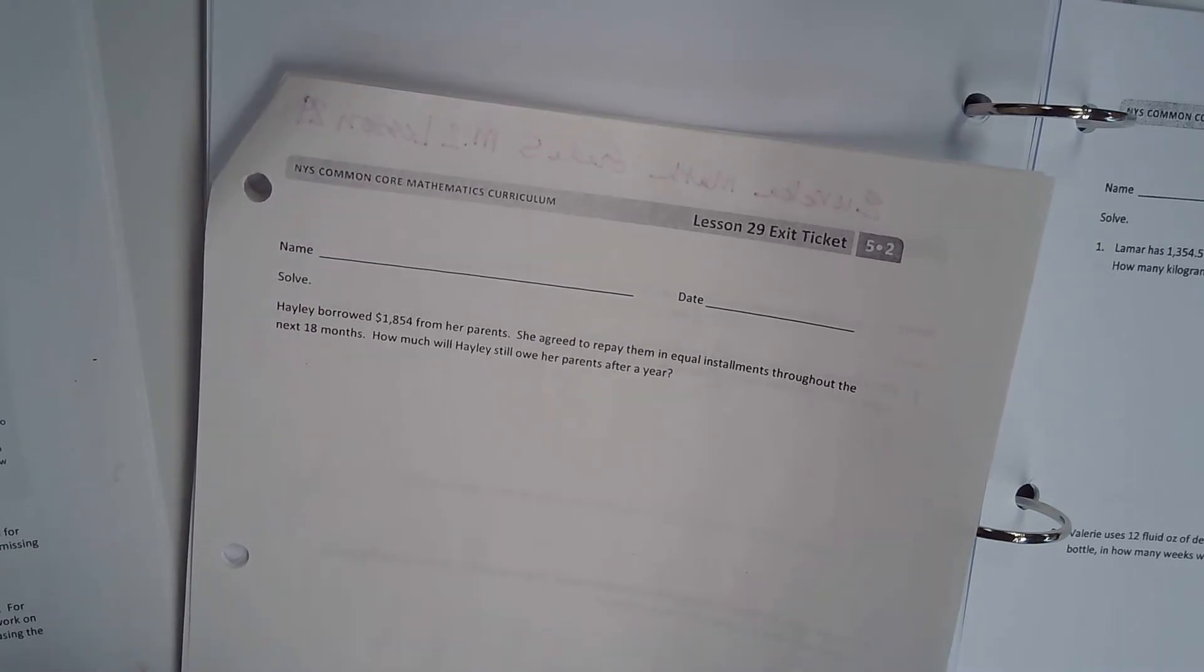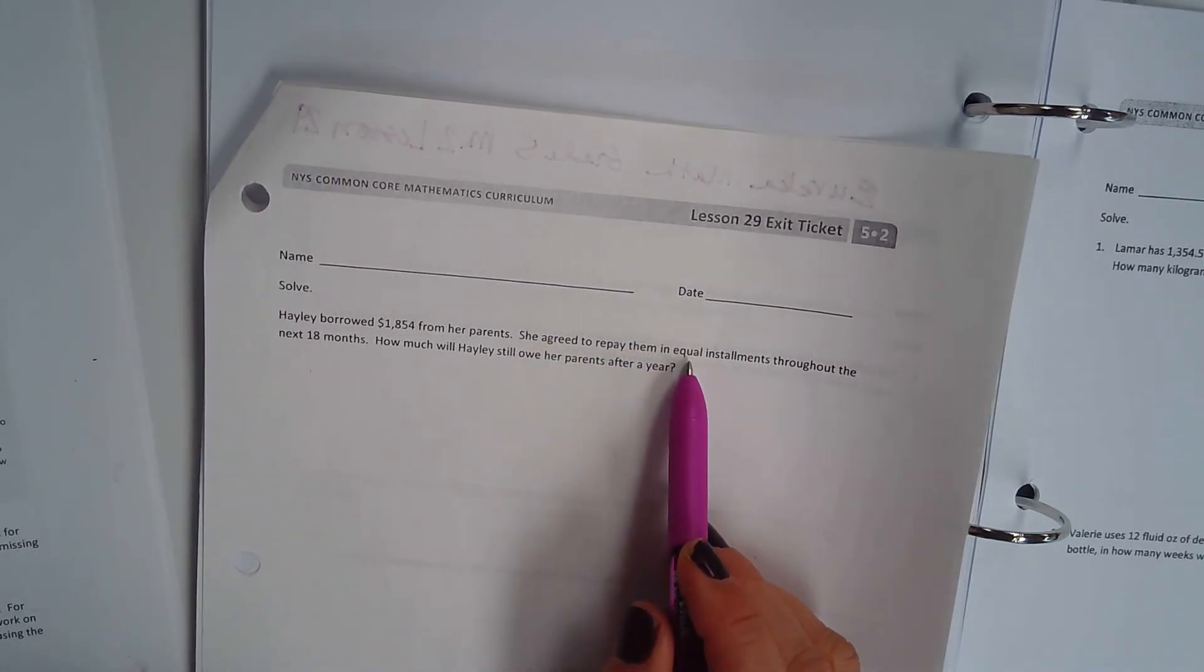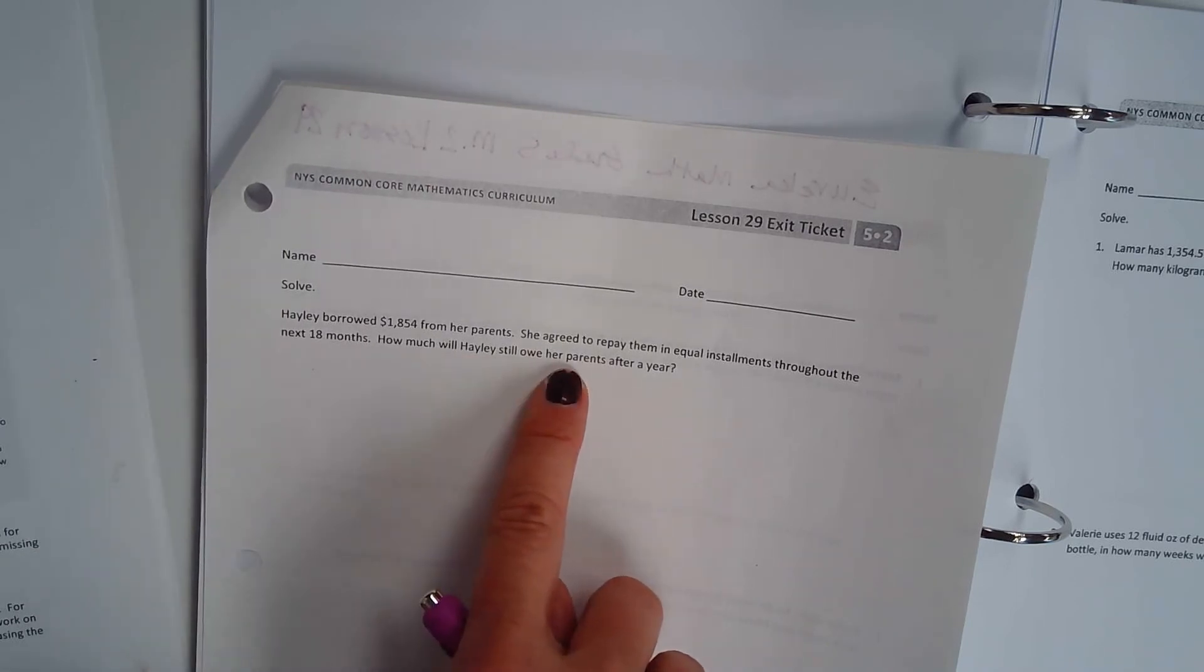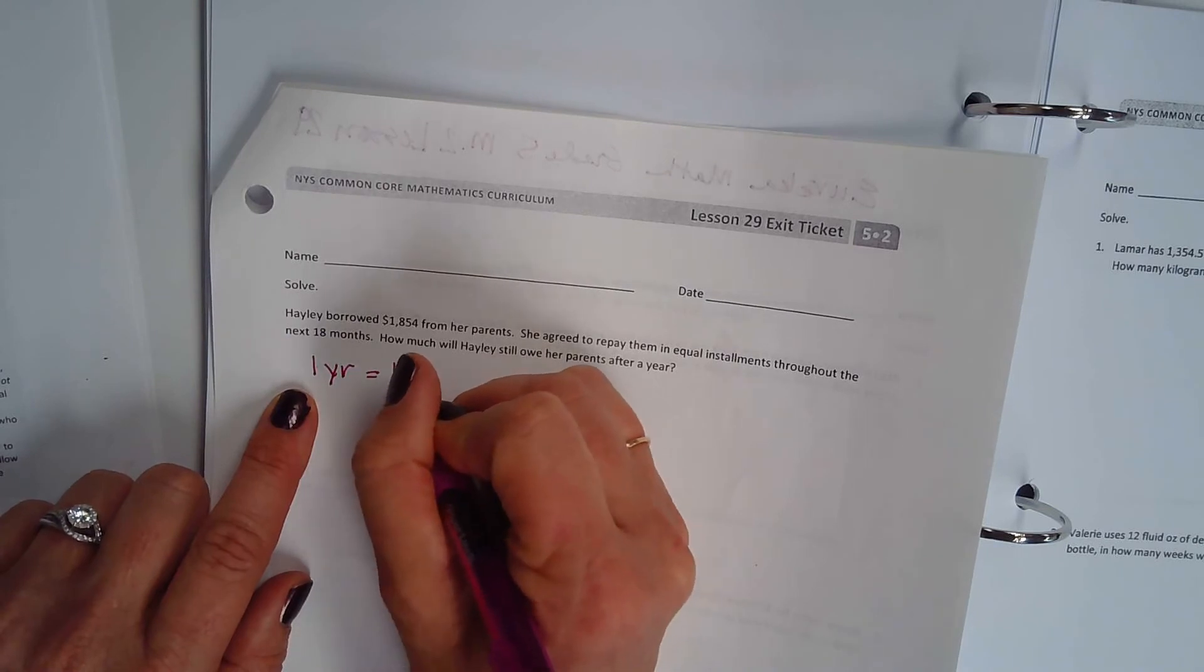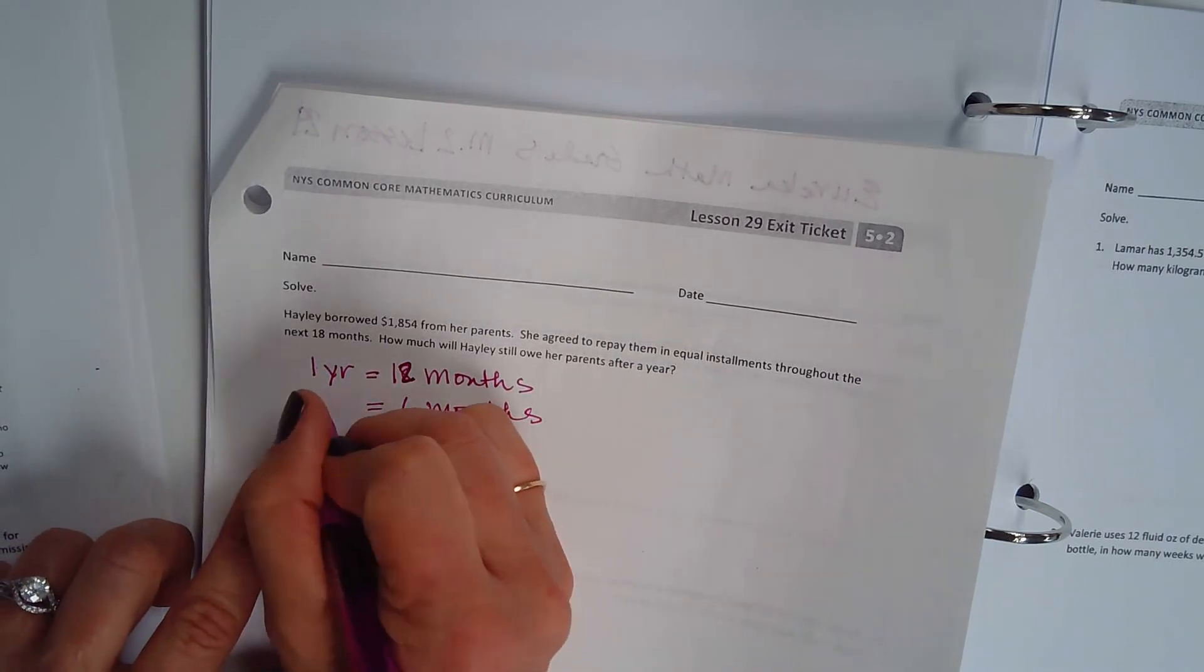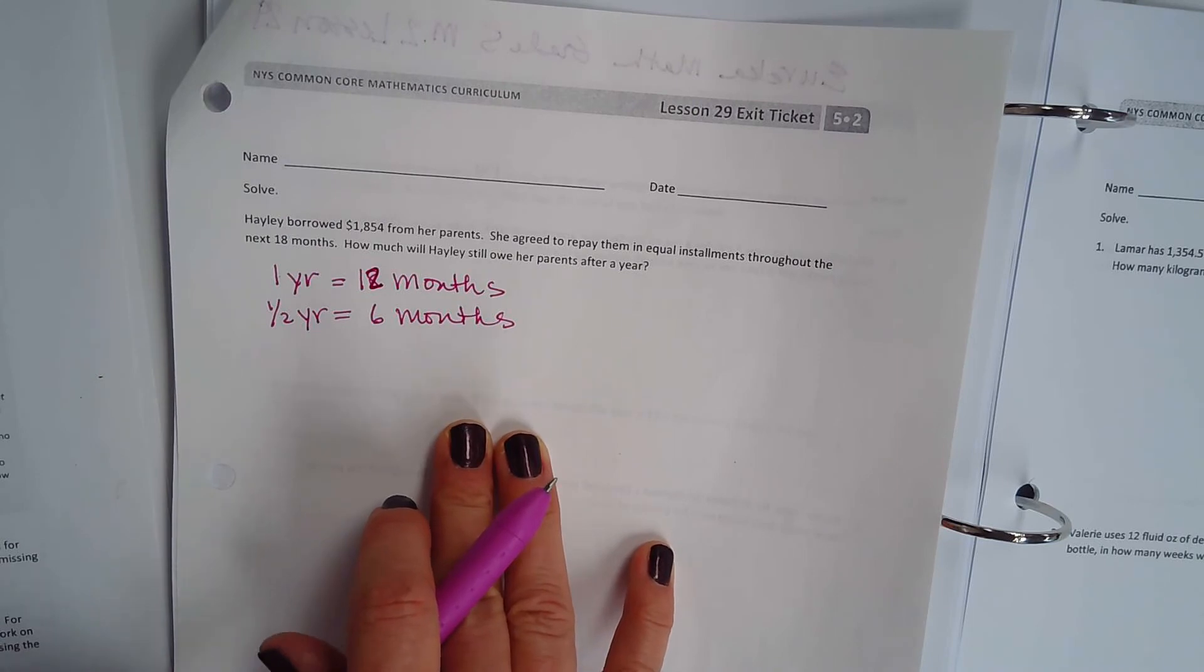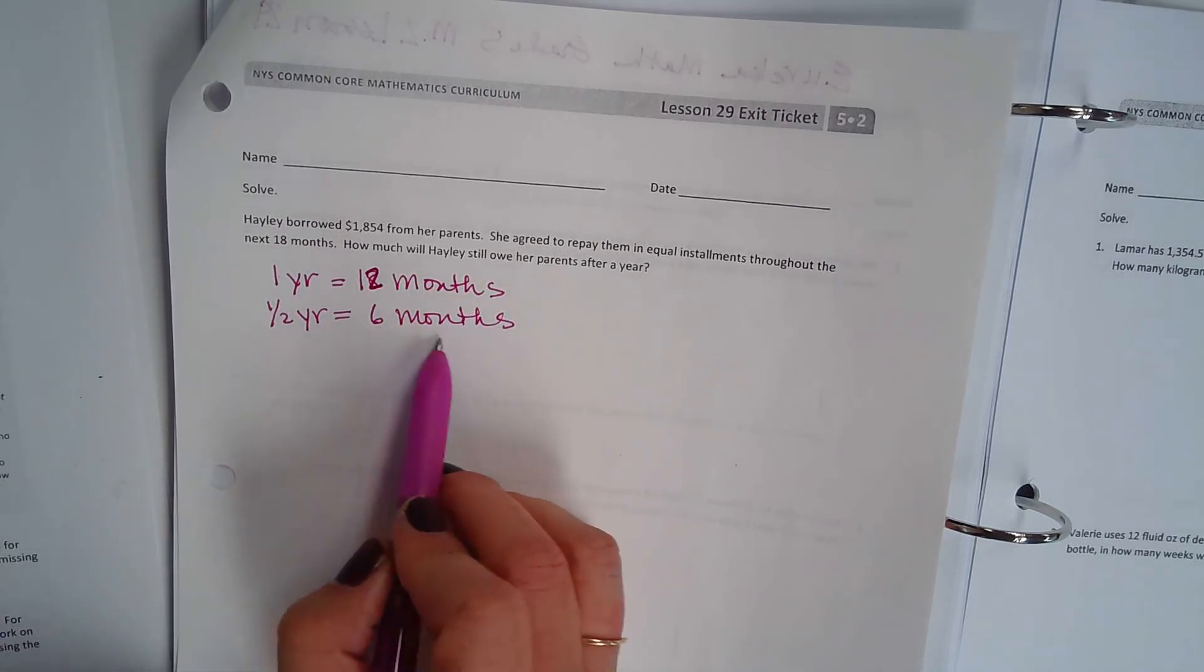Here's your exit ticket. Haley borrowed $1,854 from her parents. She agreed to repay them in equal installments. That equal installments is crying out division, isn't it? Throughout the next 18 months, how much will Haley still owe her parents after a year? So how many months are in a year? So one year is equal to 12 months, and then six months is 18, which is a half of a year. So this is not that hard of a division problem. So after one year, are you going to divide by 18 months or just by the 12 months and then know what the remainder is, what's left over.